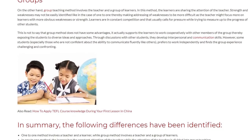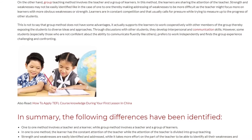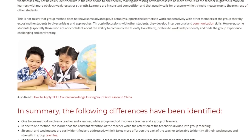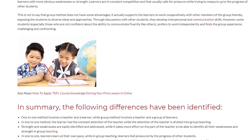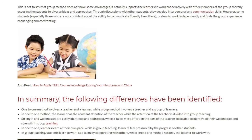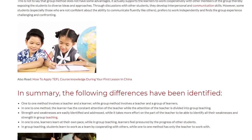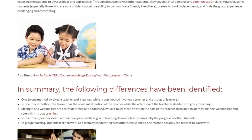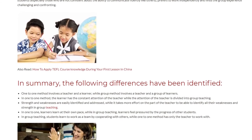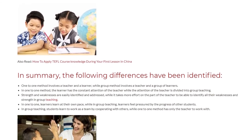However, some students — especially those who are not confident about their ability to communicate fluently — prefer to work independently and find the group experience challenging and confronting. In summary, one-to-one method involves a teacher and a single learner, while group method involves a teacher and a group of learners. In one-to-one, the learner has the constant attention of the teacher, while in group teaching the teacher's attention is divided.